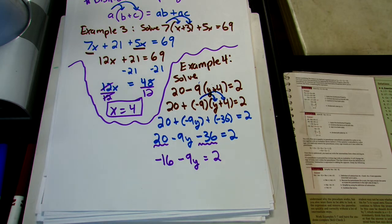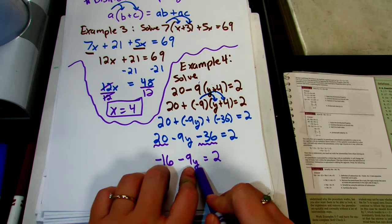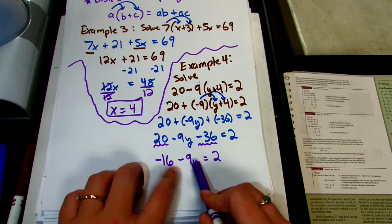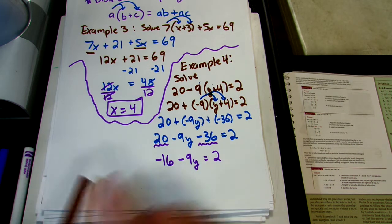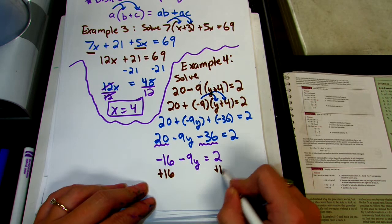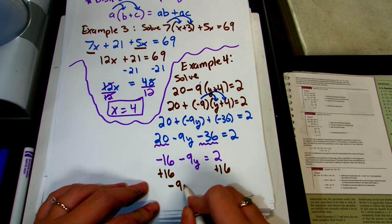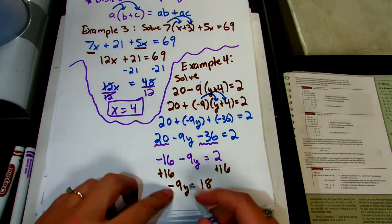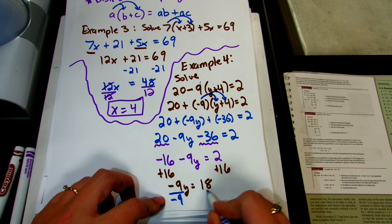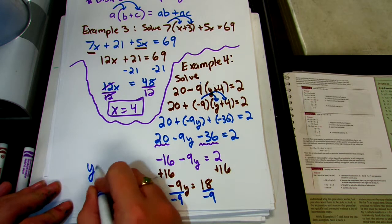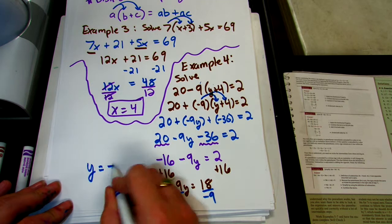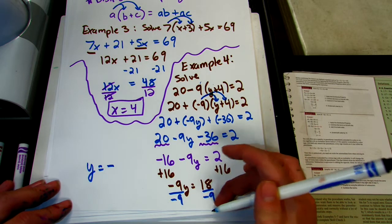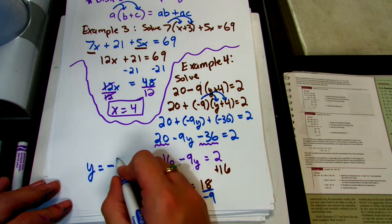We take care of addition and subtraction first. To get rid of that negative 16, we add 16 to both sides, leaving us with negative 9y equals 18. Now, to solve for y, we divide both sides by negative 9. We have a positive and a negative, which means our answer is negative. 18 divided by 9 is 2, so y equals negative 2.